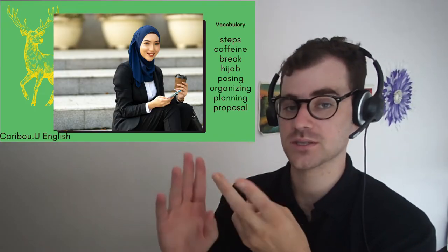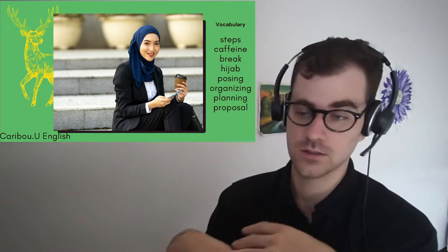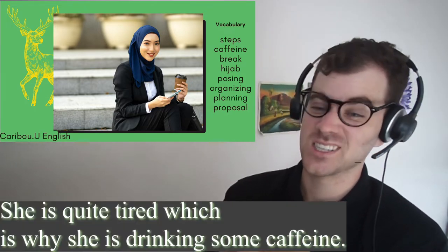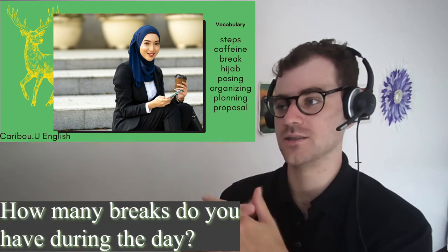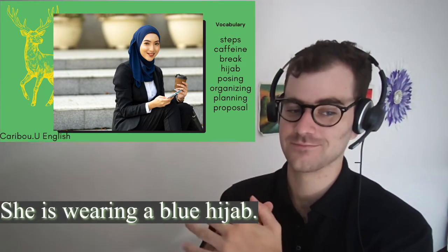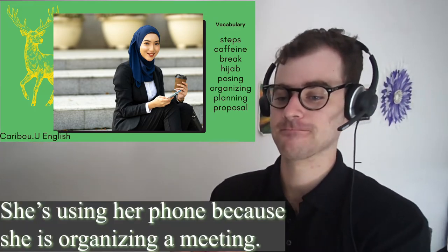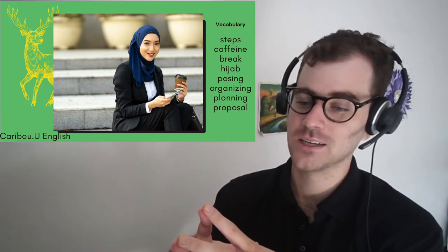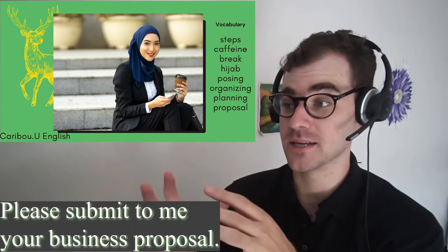There's one more picture — let's check it out. The vocabulary is: steps, caffeine, break, hijab, posing, organizing, planning, proposal. Steps: This businesswoman is sitting on the steps. Caffeine: She is quite tired, which is why she's drinking some caffeine. Break: How many breaks do you have during the day? Hijab: She is wearing a blue hijab. Posing: She's looking directly at the camera, thus posing for the picture. Organizing: She's using her phone because she is organizing a meeting. Planning: It's important that your planning takes place on time. Proposal: Please submit to me your business proposal.